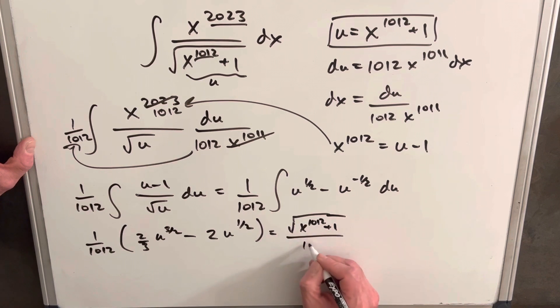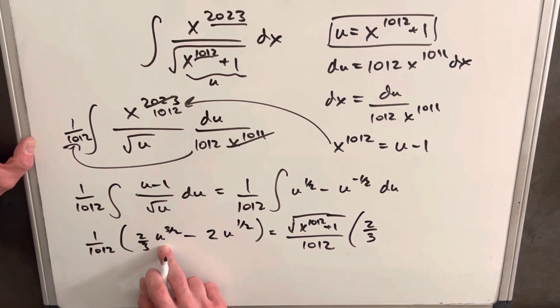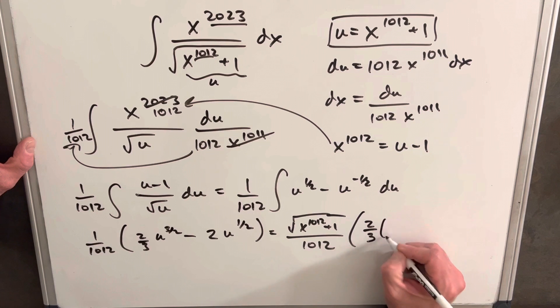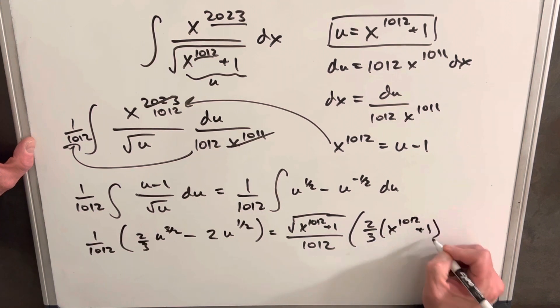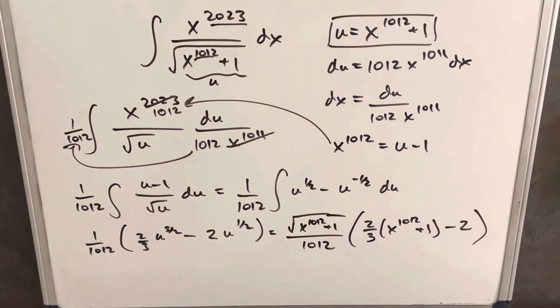Over 1012, then here we're going to have two-thirds. Now that we factored out a square root of u, this is just going to be u, which is x^1012 plus one, and then this one is just going to be minus two.